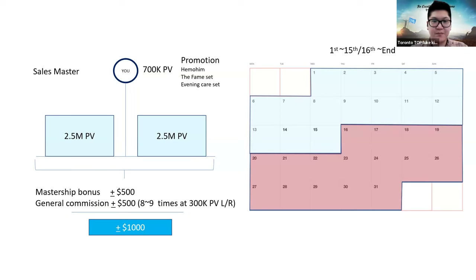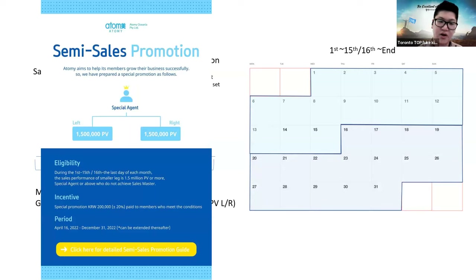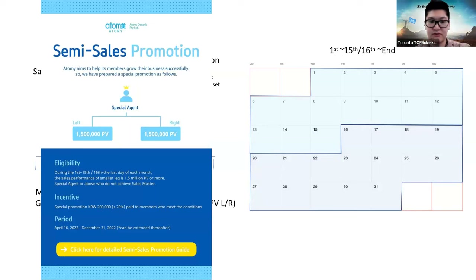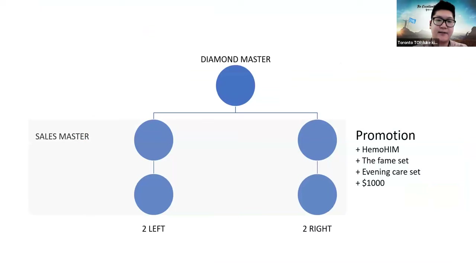There's also a special promotion constantly running — the Semi Sales Master. It allows you an extra step toward Sales Master by creating Semi Sales Masters underneath you, or you can experience how to grow your business step by step. Instead of 2.5 million PV left and right, for Semi Sales Master it's only 1.5 million PV left and right.